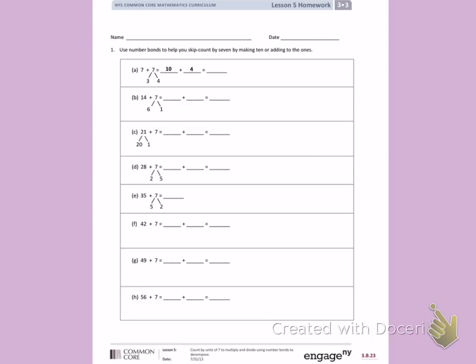This is Lesson 5 Homework from Module 3, Page 1. Today's objective was to count by units of 7 to multiply and divide using number bonds to decompose.